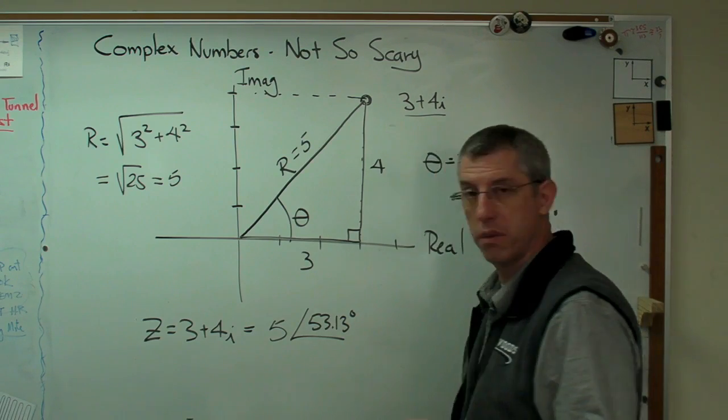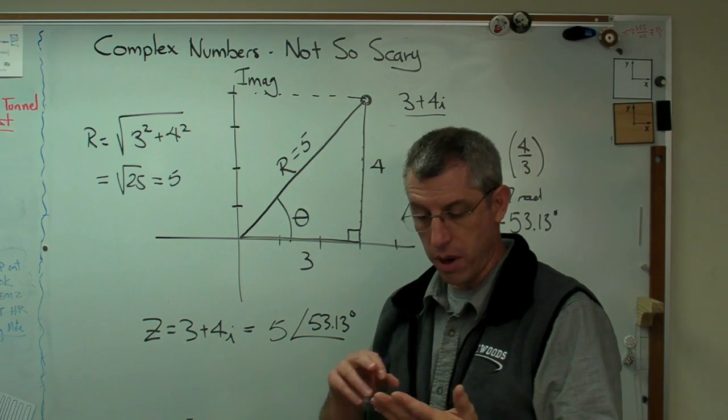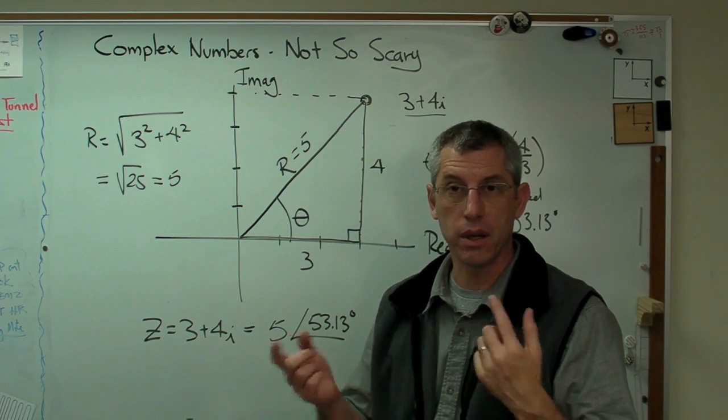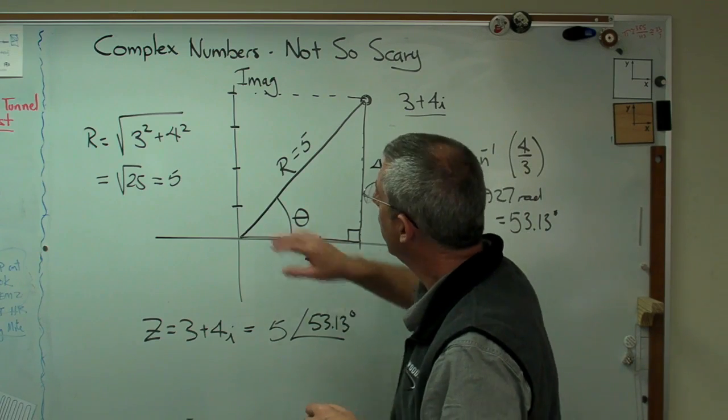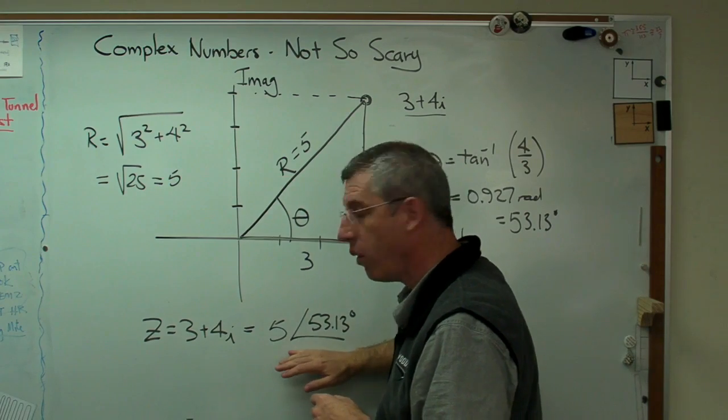So far, we've talked about what real and imaginary numbers are, where they came from, how to express it in rectangular coordinates and polar coordinates. One last thing is I want to tell you a little bit about the history of this.